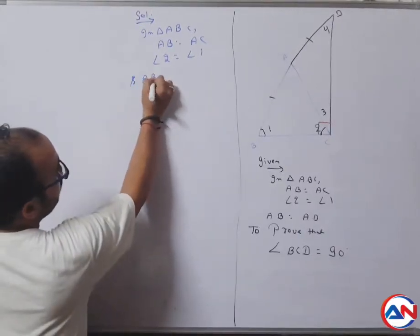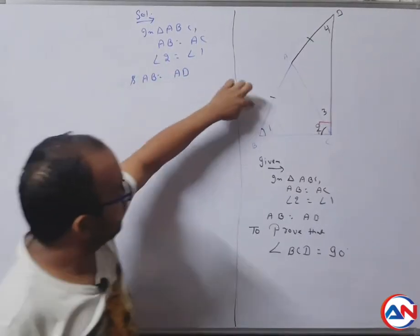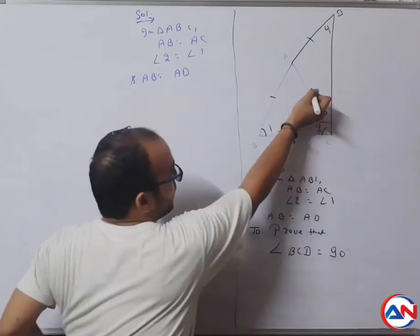And AB equals to AD. This is given. AB is equal to AD, also given. And AB equals to AC, also given.